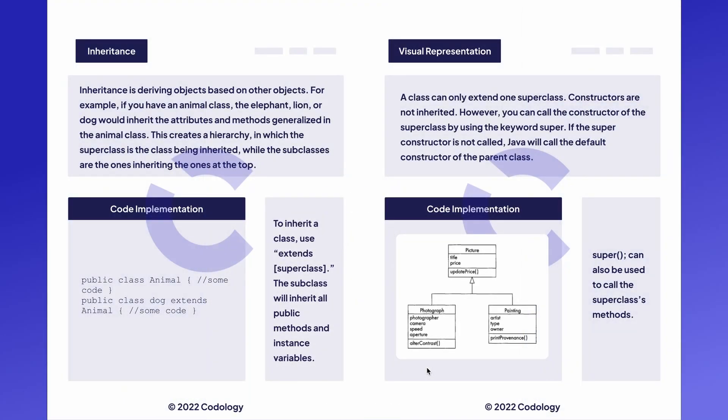Inheritance is when you derive objects based on other objects. For example, if you have an animal class and you also have an elephant class, your elephant class might inherit or extend the attributes and methods generalized in the animal class. This creates a hierarchy in which the superclass is the class being inherited — in this case the animal class — while the subclass is the one inheriting, so the elephant class.